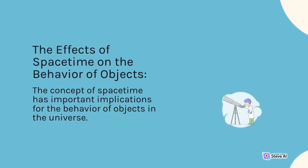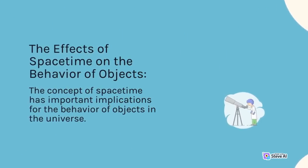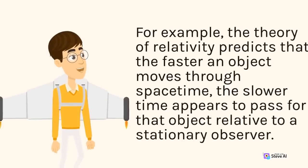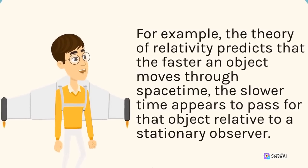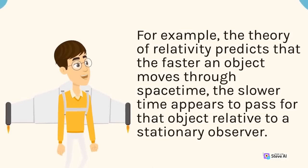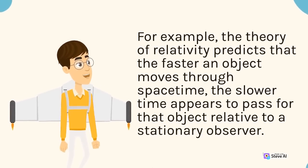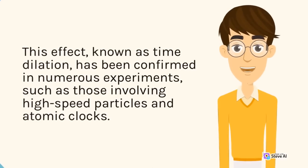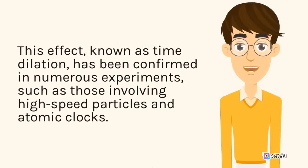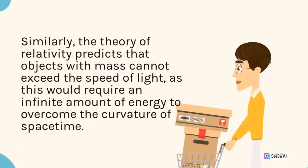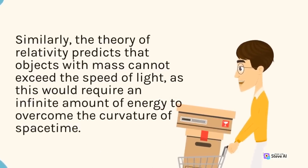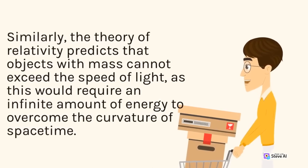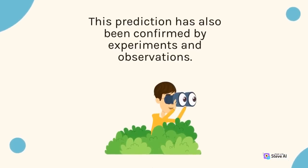The concept of spacetime has important implications for the behavior of objects in the universe. For example, the theory of relativity predicts that the faster an object moves through spacetime, the slower time appears to pass for that object relative to a stationary observer. This effect, known as time dilation, has been confirmed in numerous experiments, such as those involving high-speed particles and atomic clocks. Similarly, the theory predicts that objects with mass cannot exceed the speed of light, as this would require an infinite amount of energy to overcome the curvature of spacetime. This prediction has also been confirmed by experiments and observations.